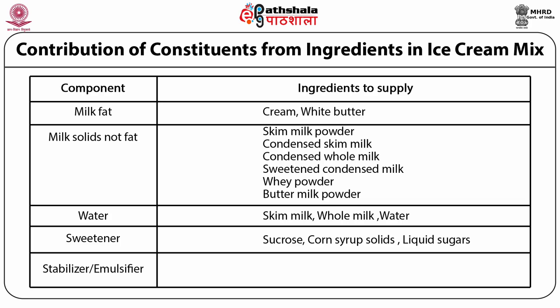The next components are stabilizers and emulsifiers. We tend to use both in ice creams, whereas emulsifiers are not always needed in frozen desserts where fat content is lower or sourced from vegetable oils. Examples of stabilizers include sodium alginate, guar gum, starch, carboxymethyl cellulose, locust bean gum, and karaya gum. Examples of emulsifiers include glycerol monostearates, polysorbates, and lecithin - which is naturally present in buttermilk powder and can also be obtained from soya bean.